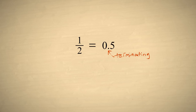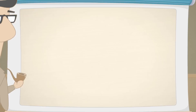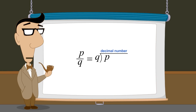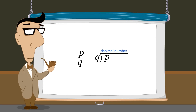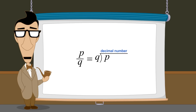So although some rational numbers, like one-half, can be represented by a finite number of digits, others, like one-third, cannot. We have seen that by dividing the numerator by the denominator, any fraction can be converted to an equivalent decimal number which will either terminate or repeat. In the next lecture we will see how to convert any terminating or repeating decimal number to a fraction.